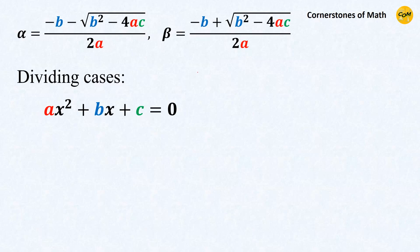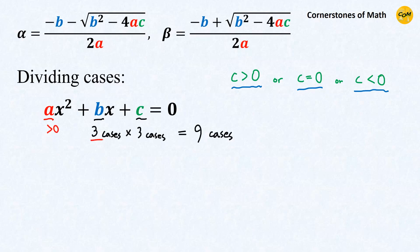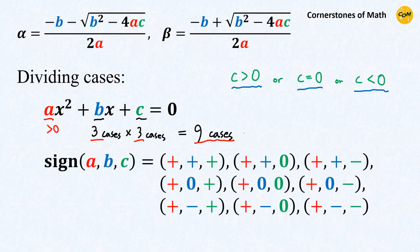We have to divide cases. Generally, a coefficient can have three signs: positive, 0, or negative. Therefore, even with the condition that a is positive, we still have 3 times 3, which is 9 cases. I will investigate all 9 cases, but let us do that at least a bit smartly by starting from the simplest case.